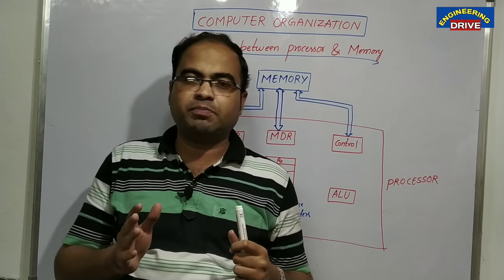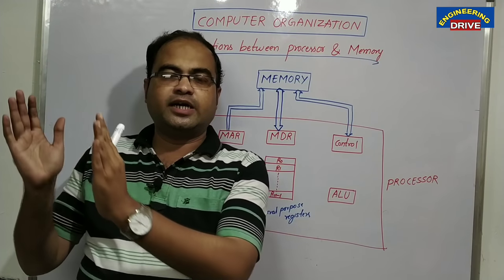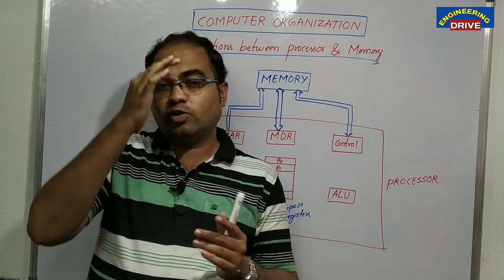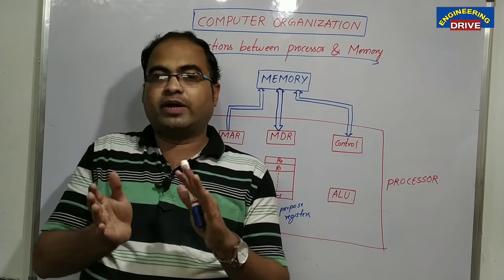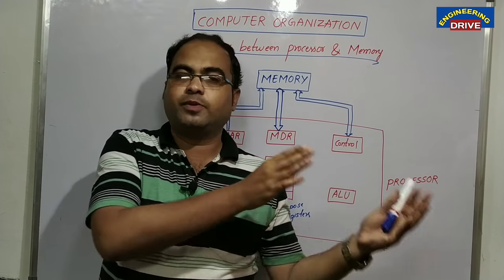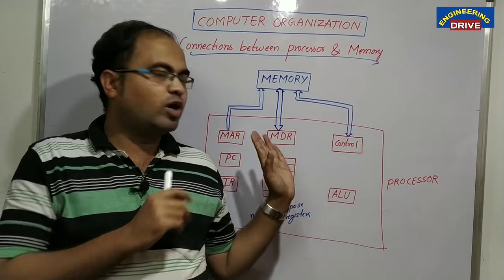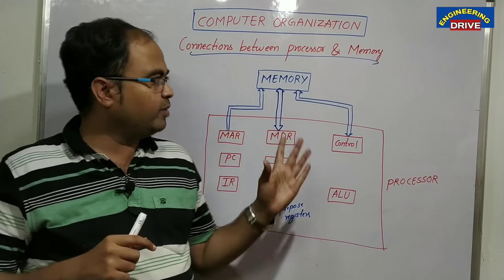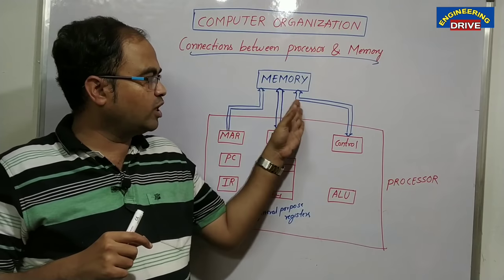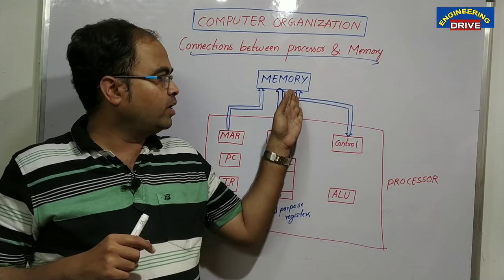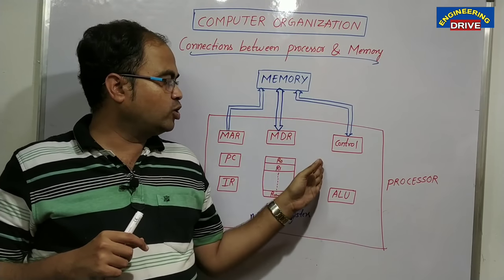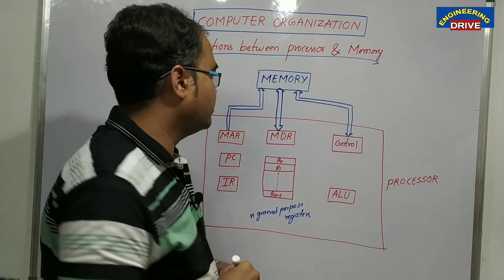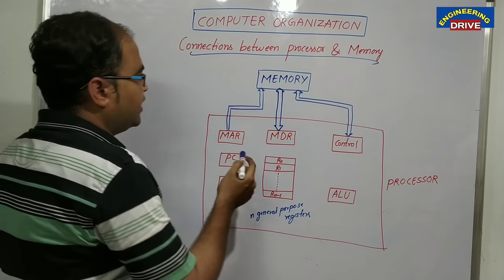In my previous videos, I told you that initially data will be available in the hard disk, from hard disk it is brought into RAM, from RAM it is brought into cache memory, and from cache memory to CPU. Now here we have not included cache memory and hard disk — our main purpose is how communication will take place from main memory to processor.